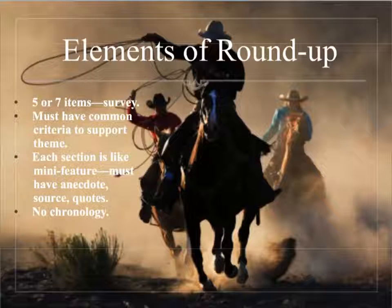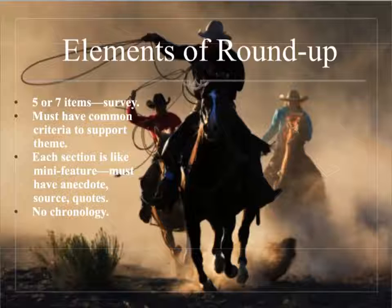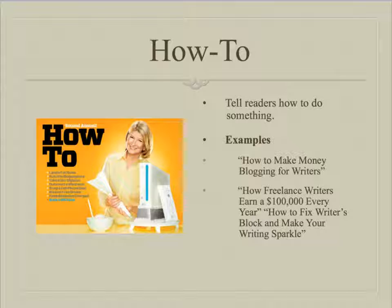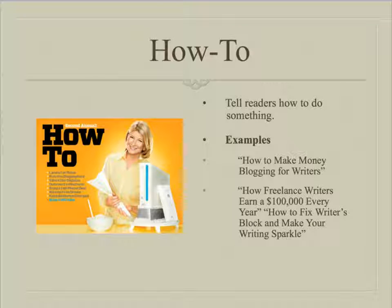That's one of the bigger differences with the roundup — there's no chronology. Because it is similar to another type of story, and that would be the how-to. How-tos identify themselves pretty obviously: how to make money blogging for writers, how to be a freelance writer and earn $100,000 a year, how to fix writer's block, et cetera.